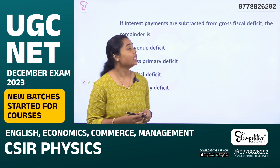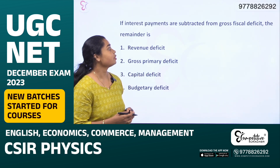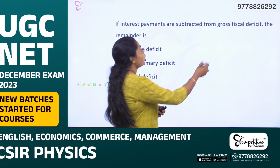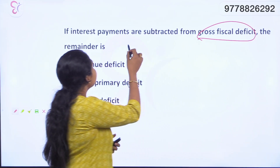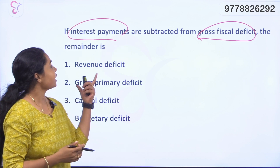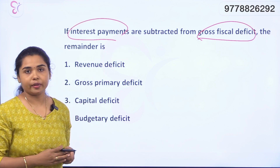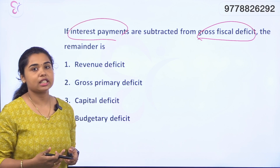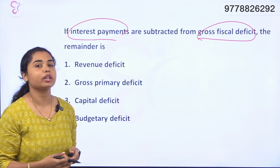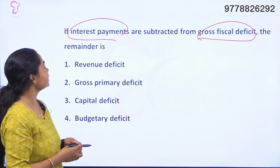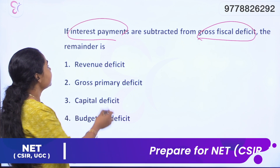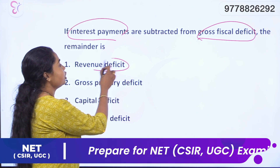First question: if interest payments are subtracted from the gross fiscal deficit, the remainder is what? Let's discuss all the deficit concepts. What do we need to do with this deficit?